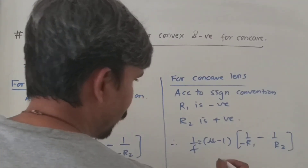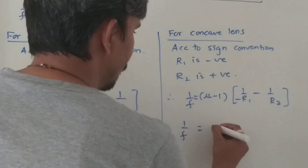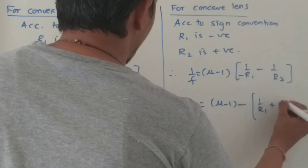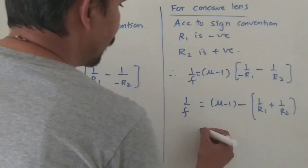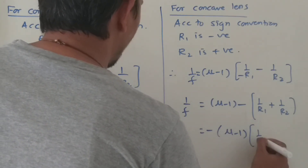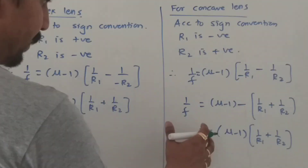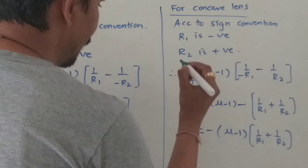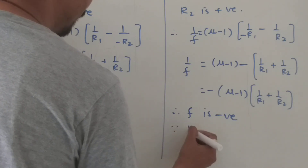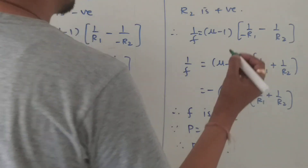From this, I will take the minus sign common and bring it outside. So 1 by f equals negative of mu minus 1, times 1 upon R1 plus 1 upon R2. This gives a negative sign overall. Therefore, since P equals 1 by f, the power is also negative for a concave lens.